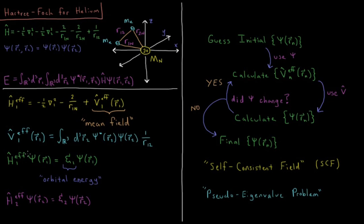We do the same thing for electron two, integrating out how electron two feels the mean field of electron one. If there are more electrons, each individual electron feels the mean field of all other electrons combined. However, there is a problem: the Hamiltonian that electron one feels depends on the wave function of electron two, and the Hamiltonian that electron two feels depends on the wave function of electron one. So our wave function depends on our operator, but our operator depends on our wave function — creating a problem of circular logic.